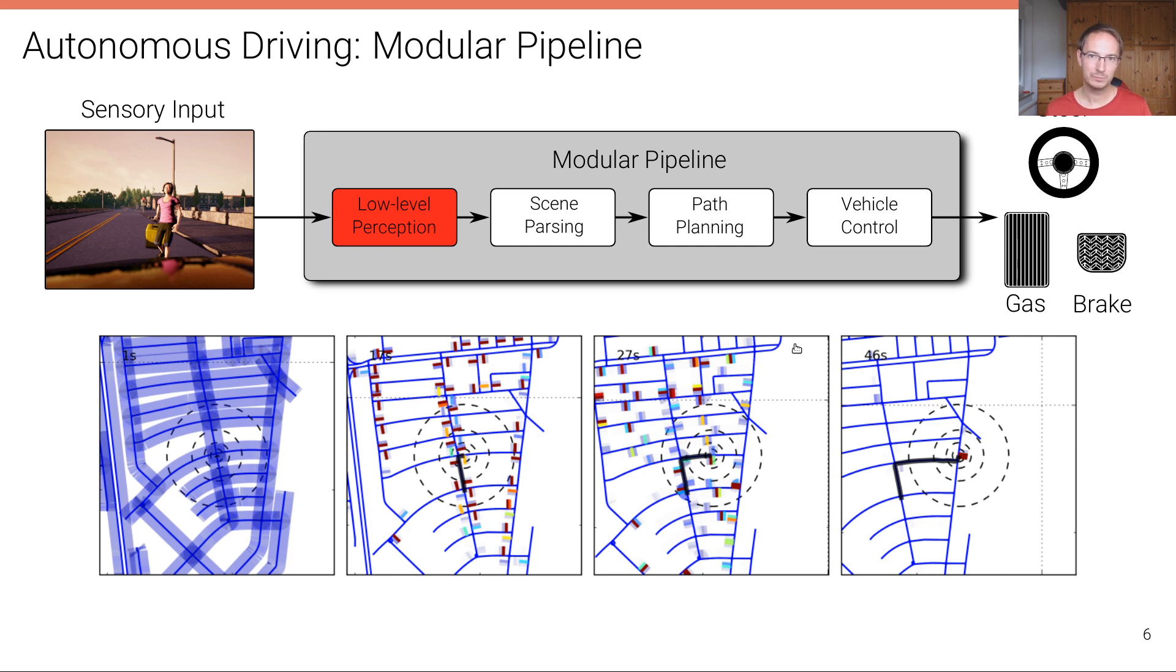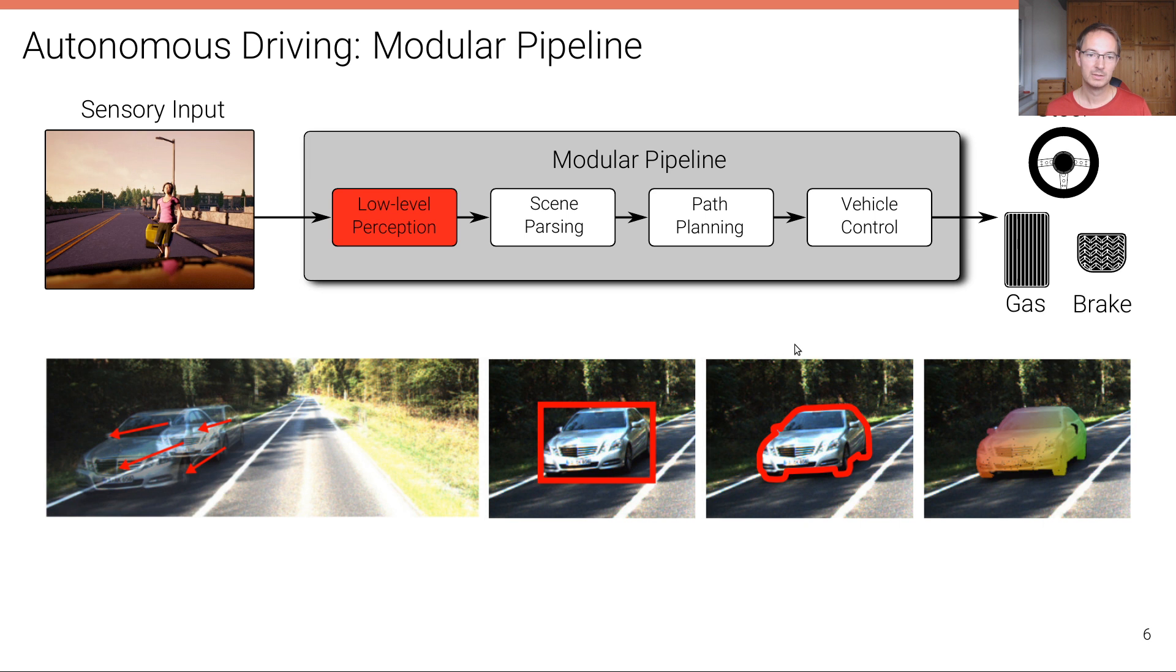Let's start with the first module. The first module is responsible for low-level perception. For example, the vehicle has to localize itself. It has to detect vehicles and buildings and lane dividers and lane markings. Here's an example of localization, and here's an example for object detection.